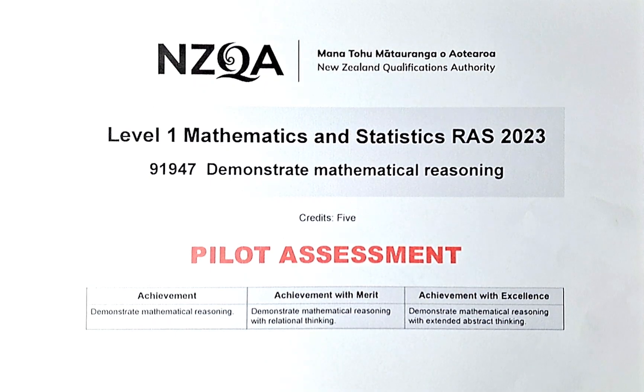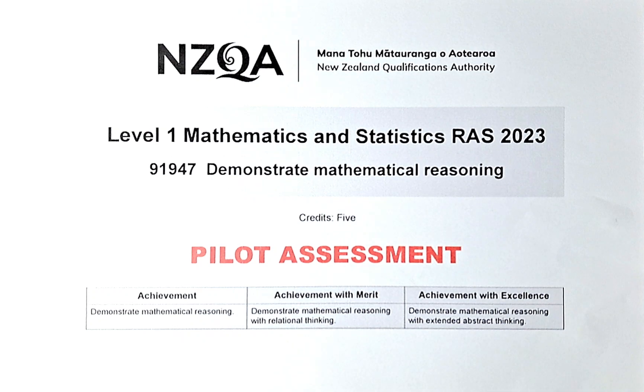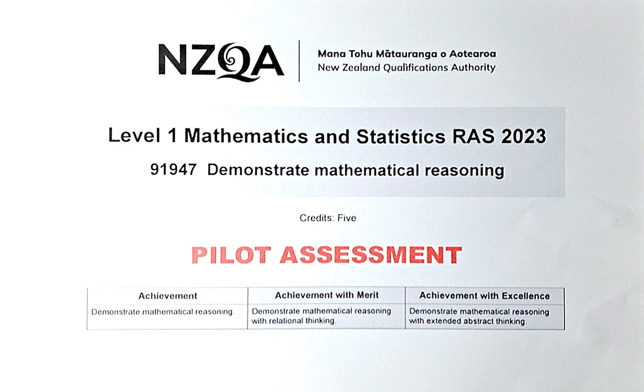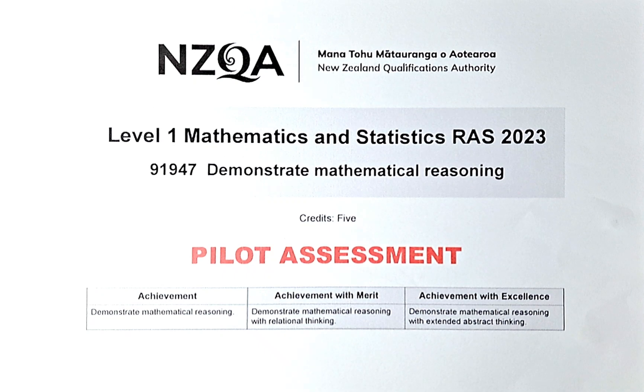Good day and welcome to video number four. This is the Maths and Stats RAS 2023 paper called Demonstrating Mathematical Reasoning, paper number 91947. This is the five credit external and this is the first time this standard will be introduced in the NCEA program level one.